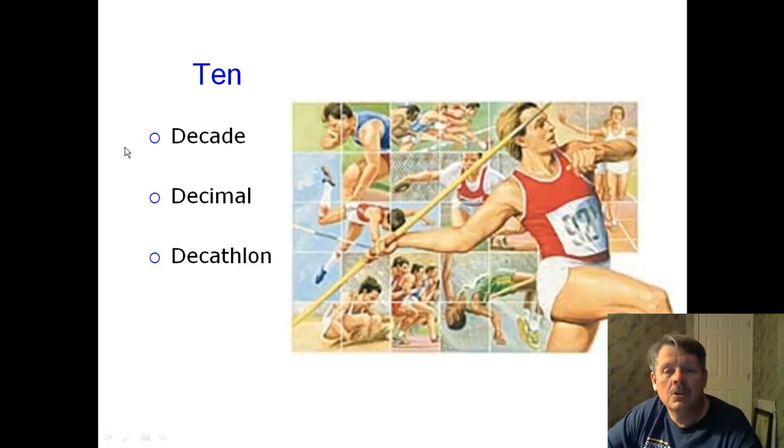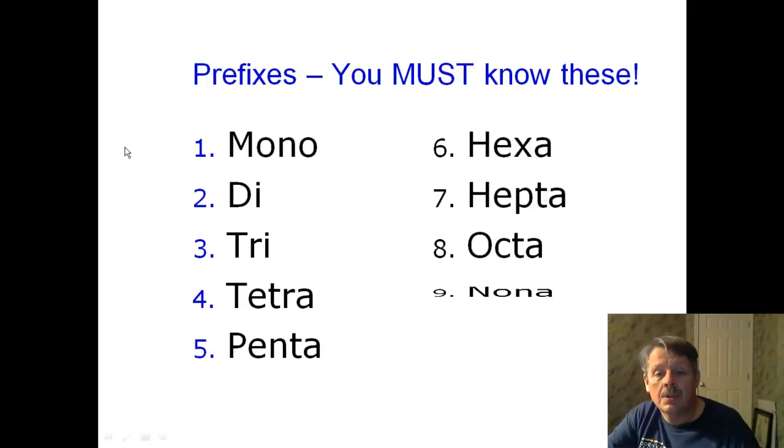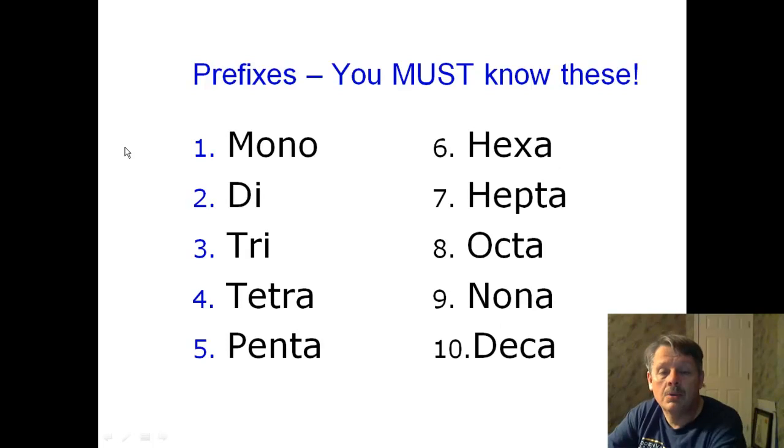And ten, there are things that you should know, like decade, which means ten, or decimal, which means there are ten numbers in it. And decathlon is an Olympic sport, this time for men, which has ten events in it. So you must know the prefixes. And they are mono-di-tri-tetra-penta, hexa-hepta-octa-nona-and-deca. So pause the video, please. Write them down, because you're going to need them.